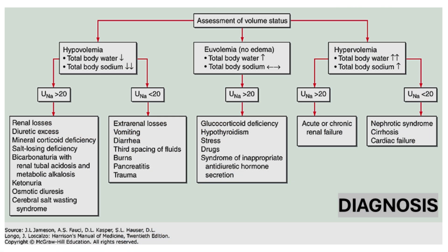Low urine sodium, below 20 millimoles per liter, typically indicates extrarenal fluid loss, such as vomiting, diarrhea, or other nonrenal causes of hypovolemia, where the body is conserving sodium to maintain volume status. High urine sodium, above 20 to 30 millimoles per liter, suggests renal loss of sodium, such as with diuretic use, salt-wasting nephropathies, or cortisol deficiency. It is also characteristic of SIADH.